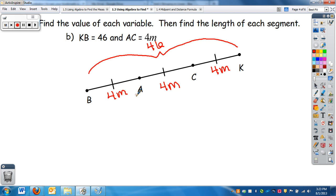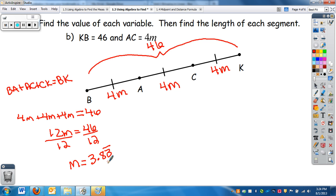Now there are different strategies you could use to solve this problem. I'm going to actually show you two different ways you could think of it. One way, you know that BA plus AC plus CK equals BK. So you can get 4M plus 4M plus 4M equals 46. And then that's 12M equals 46 divided by 12. It comes out to be, it will be a decimal, 3.83 repeating.